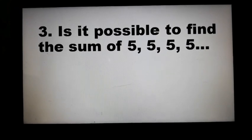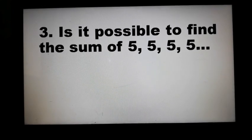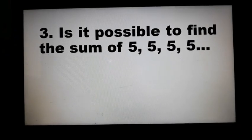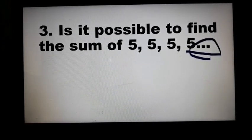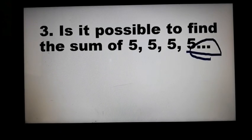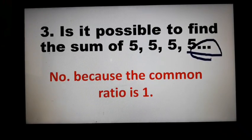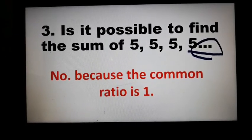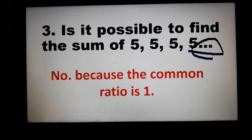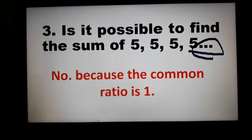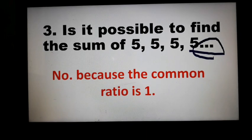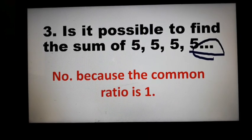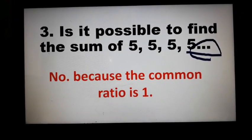Example 3: Is it possible to find the sum of 5, 5, 5, 5, and so on? This is another example of an infinite geometric sequence because of the ellipses, which states that the number will be endless. Is it possible to find the sum? The answer is no, because the common ratio here is 1. Remember the rules: if it's greater than 1 — not possible; if it's less than negative 1 — not possible; if it's equal to 1 or negative 1 — we also cannot find the sum of the infinite geometric sequence.